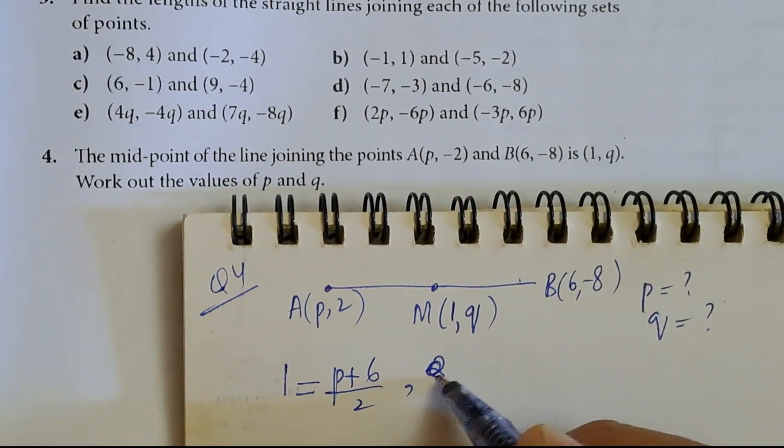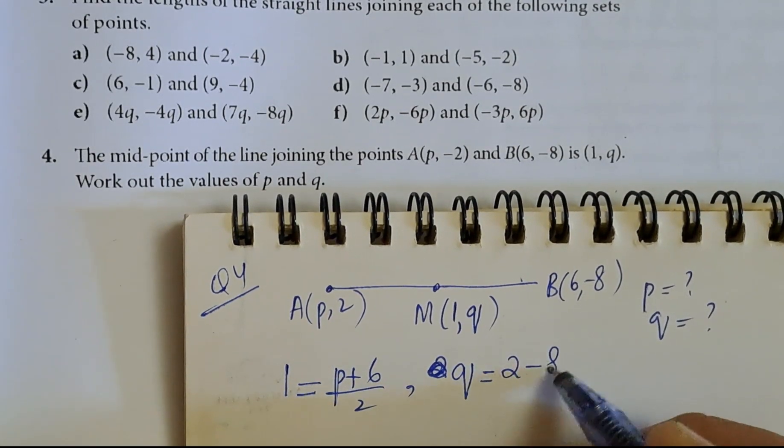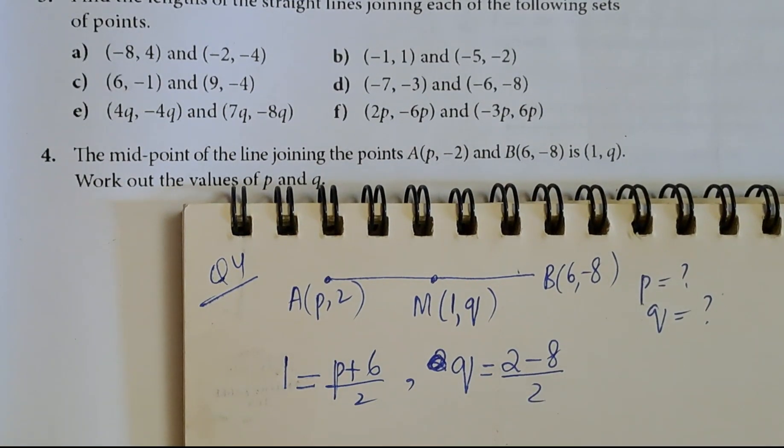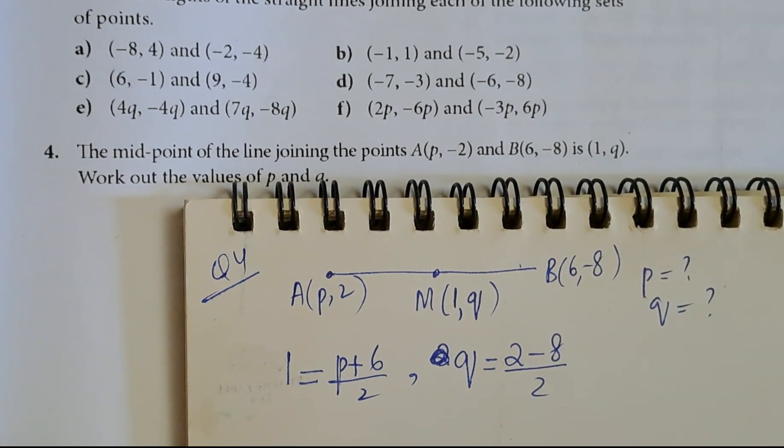And q equals 2 minus 8 upon 2. Is it correct? It is correct. Now I will show you the values.